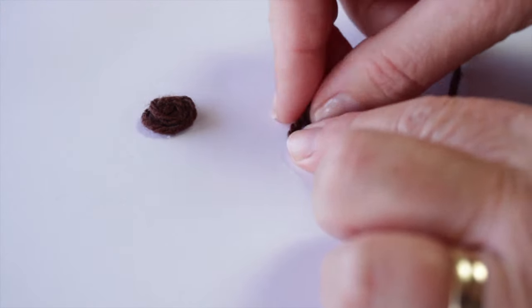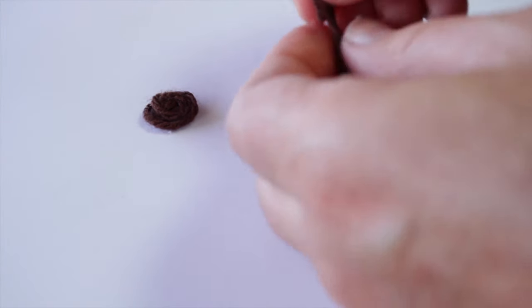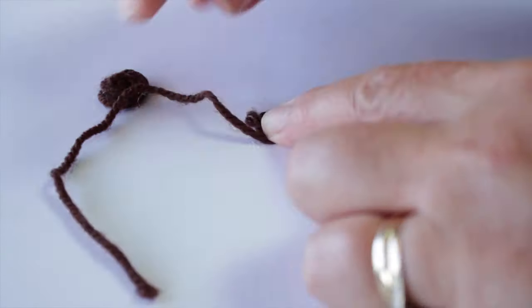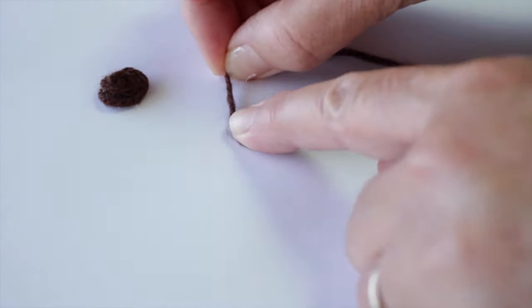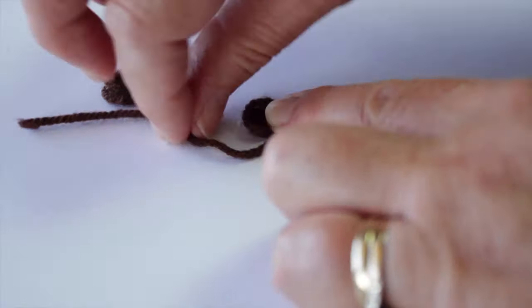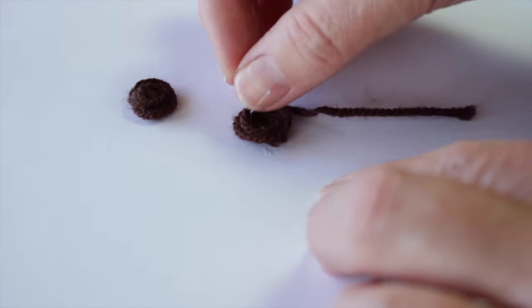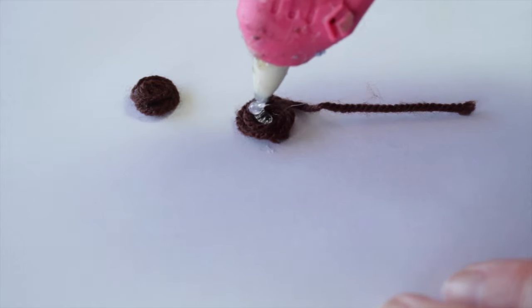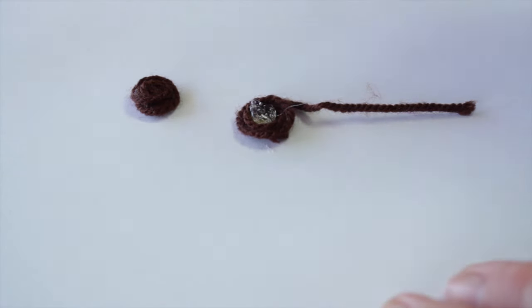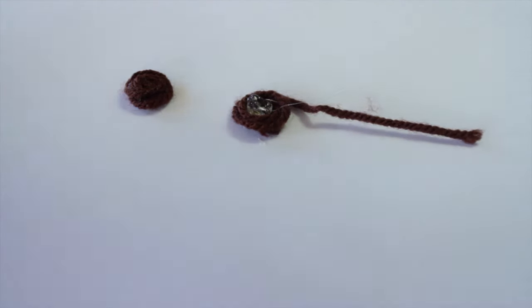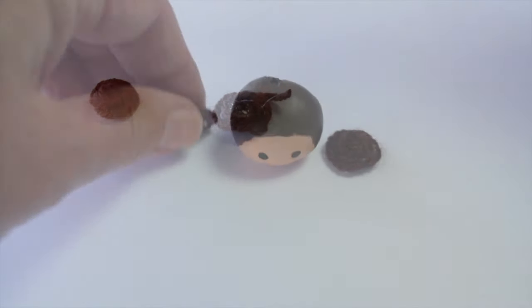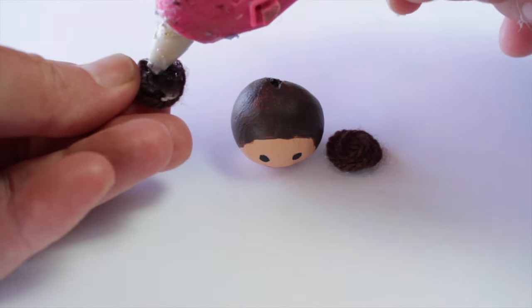For Leia's buns, I used two strands of wool. Wrap each strand into a circle and hot glue them to keep the strands together. Cut off any loose ends, then glue the buns onto the sides of Leia's head.